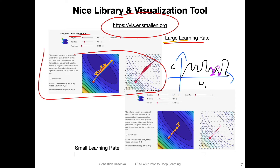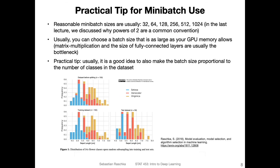There is essentially a sweet spot between having too little noise and too much noise. In the beginning of training, it might be good to have large noise to overcome some of the local minima, but then over time to decrease this noise. This is essentially what learning rate decay is intended to do. But before we talk about learning rate decay, let me give you one more practical tip for mini batch use.